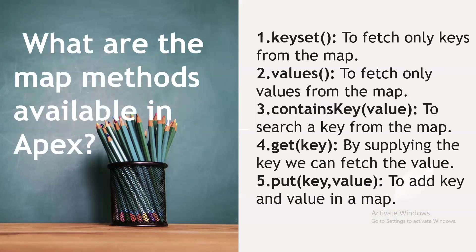What are the frequently used Map methods in Apex? The five commonly used methods are: keySet() to fetch only keys, values() to fetch only values, containsKey() to search for a key, get() to fetch the value by supplying a key, and put() to add a key-value pair to the Map.